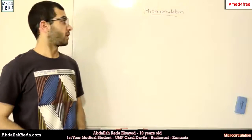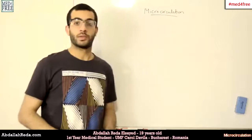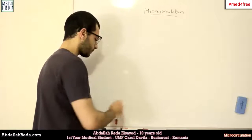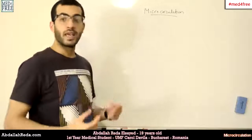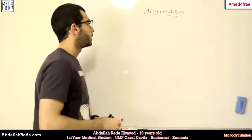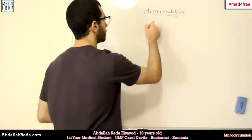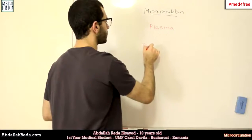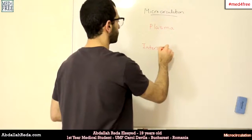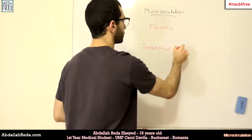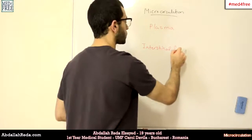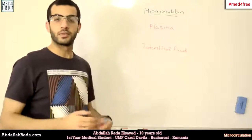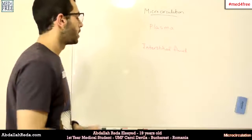This time we're going to talk about something called microcirculation. This term means the exchange that occurs between the plasma and the interstitial fluid. It's called micro because it takes place between capillaries and the interstitial fluid.